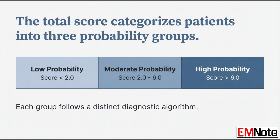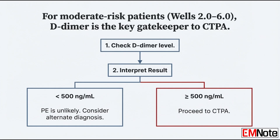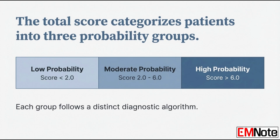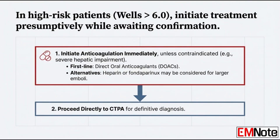What about a moderate probability Wells score — a total between 2 and 6? You skip PERC entirely and go straight to a D-dimer with the same 500 nanograms per milliliter cutoff. If it's high, they get a CTPA; if it's low, you've ruled it out. And for the high probability patient — a Wells score above 6 — your suspicion is so high, you start anticoagulation right away before you even have a confirmed diagnosis. Usually with a direct oral anticoagulant, unless there's a contraindication like severe hepatic impairment. If you suspect a really large embolus, heparin or fondaparinux can be better choices, especially if you think you might need to reverse the anticoagulation or move to a more aggressive therapy.